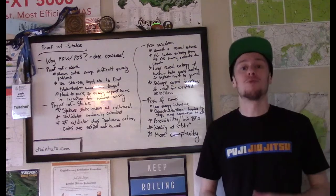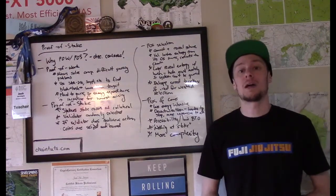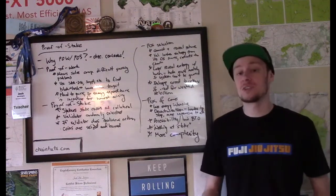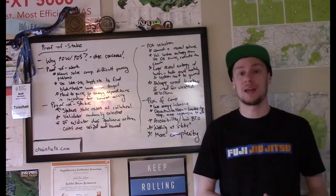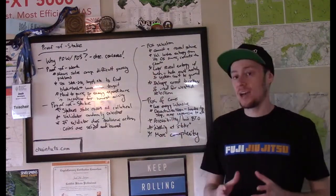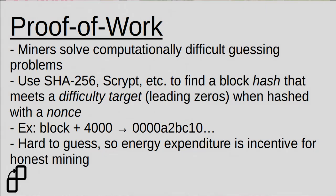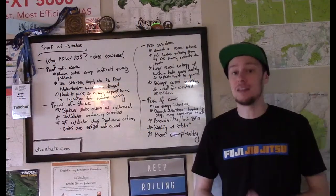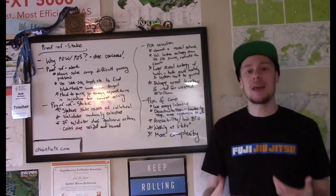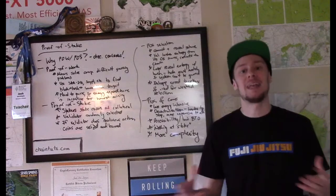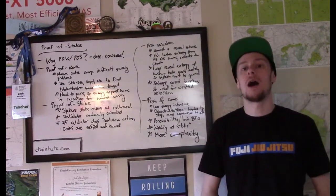Let's first talk about proof of work. This is the first consensus mechanism really used by these distributed systems and the one still very popular for systems like Bitcoin, Litecoin, Bitcoin Cash, and others. For proof of work, miners — people running Bitcoin software who elect to participate in the validation process — solve computationally difficult guessing problems. They take a secure hash function like SHA-256 in the case of Bitcoin or Scrypt in the case of Litecoin to find block hashes that match a certain difficulty target. Every 10 minutes or so, miners on the network look at all the pending transactions and put them together in a proposed block.